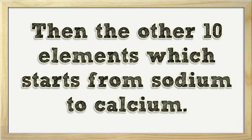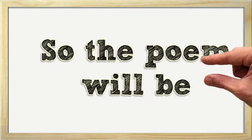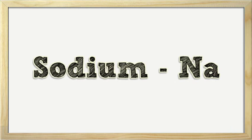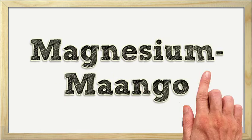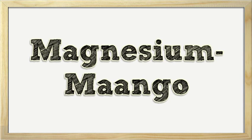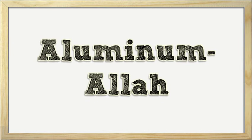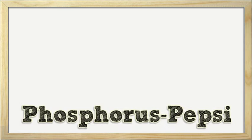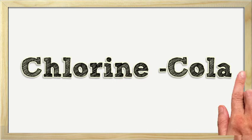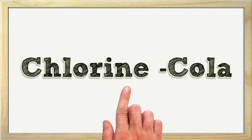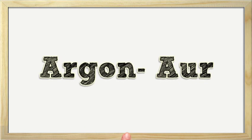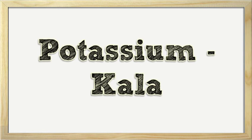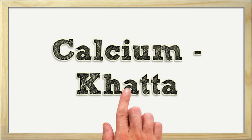The other 10 elements start from Sodium to Calcium. The poem will be: Sodium - nap. Magnesium - mango. Aluminium - alan. Silicon - say. Phosphorus - pepsi. Sulfur - soda. Chlorine - cola. Argon - ore. Potassium - cala. Calcium - chata.